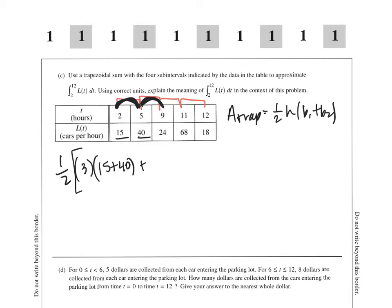My next trapezoid has a height of 9 minus 5, which is 4. Its bases are 40 and 24. My next trapezoid has a height of 2, bases of 24 and 68. And my last trapezoid has a height of 1, bases of 68 and 18.